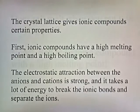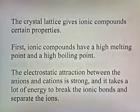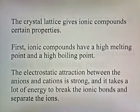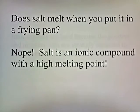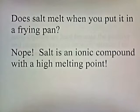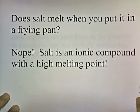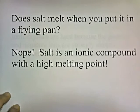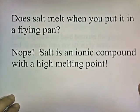The crystal lattice gives ionic compounds certain properties. First, ionic compounds have a high melting point and a high boiling point. The electrostatic attraction between the anions and cations is strong, and it takes a lot of energy to break the ionic bonds and separate the ions. That's why the melting and boiling points are so high. Salt is an ionic compound — it doesn't melt in a frying pan because the bond between positive and negative ions is so strong that it takes extreme volcanic temperatures to liquefy.